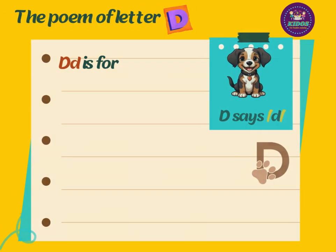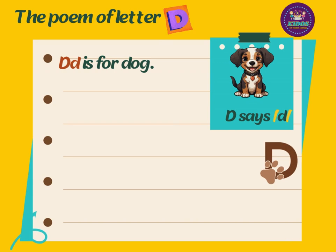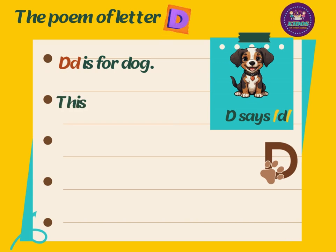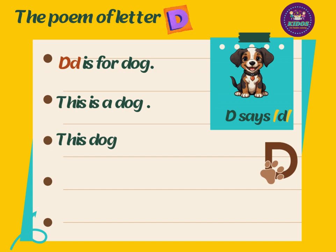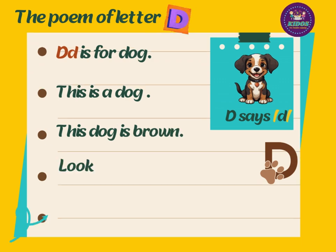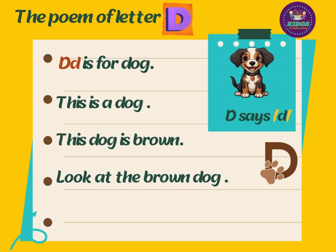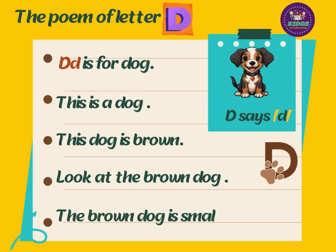D is for dog. This is a dog. This dog is brown. Look at the brown dog. The brown dog is small.